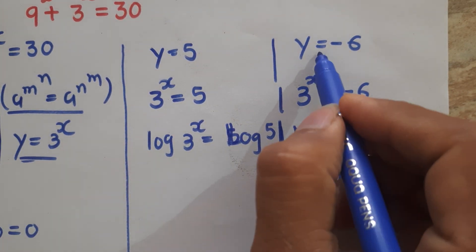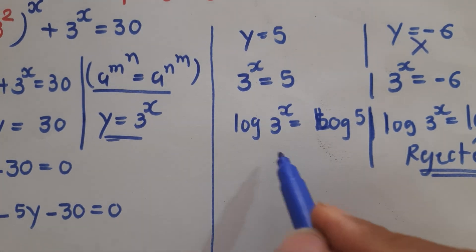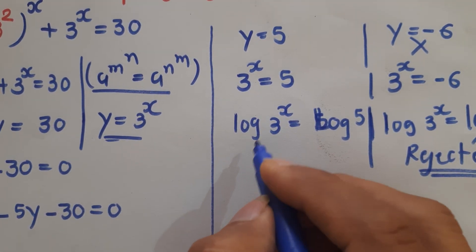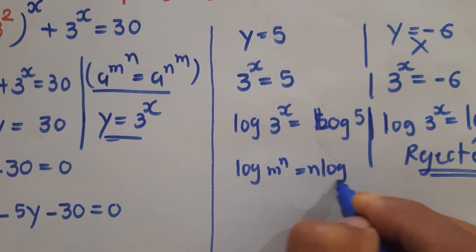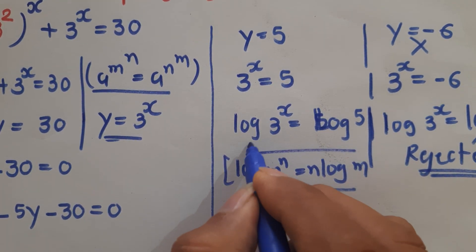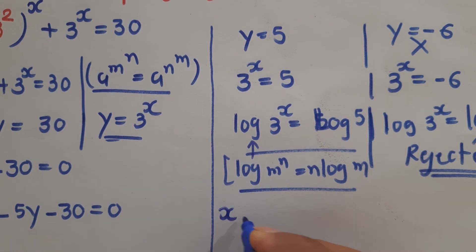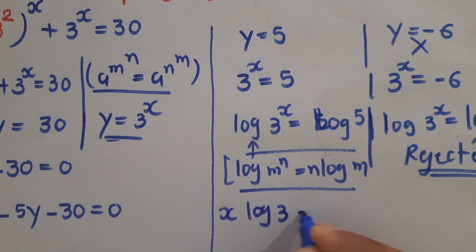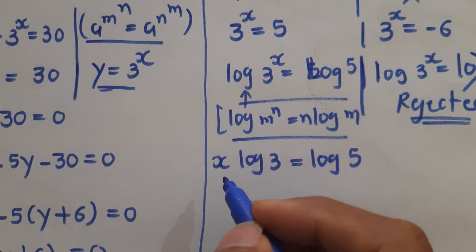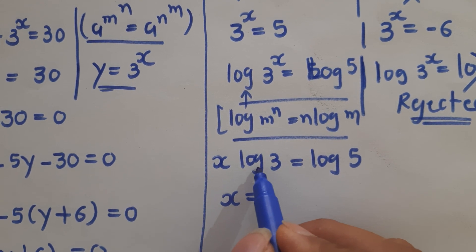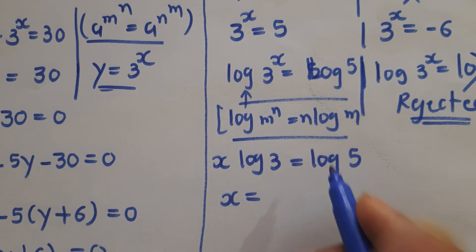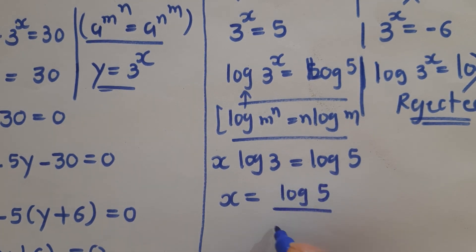Working with the valid solution, we apply the rule that log(m^n) equals n·log(m). So we have x·log 3 equals log 5. Taking log 3 to the right hand side in division, we get x equals log 5 divided by log 3. This is our final solution.